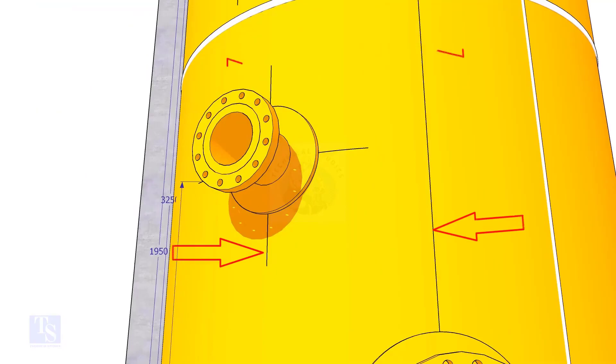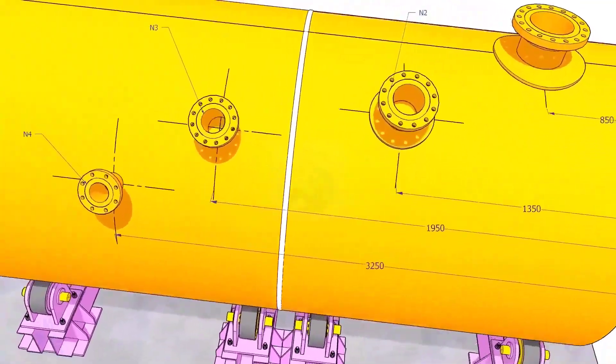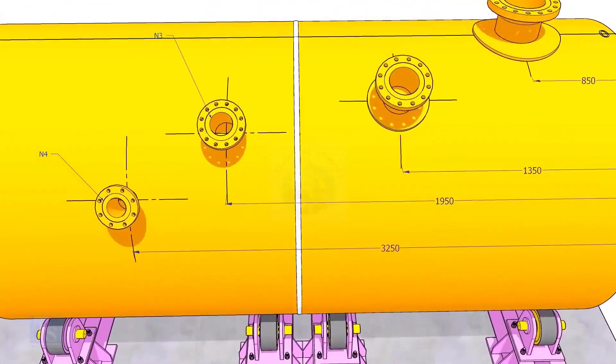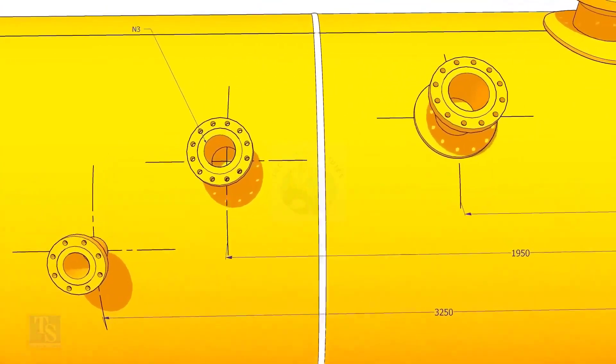Mark this dimension at two locations as shown and draw a line. Draw an arc of 1350 millimeters from the edge of the shell intersecting this line. This point is the center of the nozzle N2.